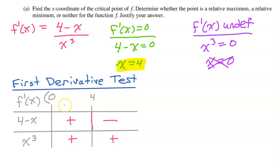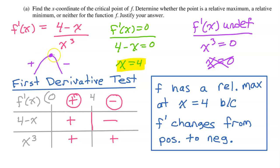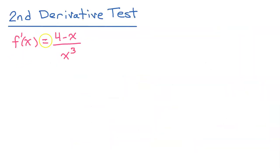Looking at the overall sign of f prime: in the first interval it will be positive, and in the second interval it will be negative. f has a relative maximum at x equals four because f prime changes from positive to negative. This means the original function f goes from increasing to decreasing, giving us a relative maximum.